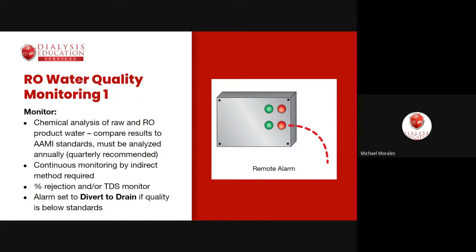At least annually, a full chemical analysis is performed on both raw/feed water and product water — samples are sent to the lab for a complete panel including potassium, calcium, sodium, and more. Quarterly testing is recommended but not mandated. Continuous monitoring combines direct daily testing with indirect monitoring — reviewing patient blood work and symptoms for clues about water quality.